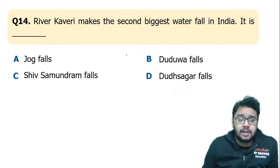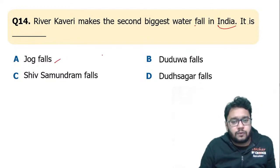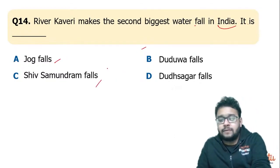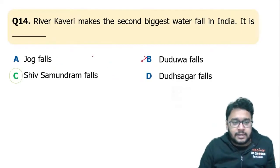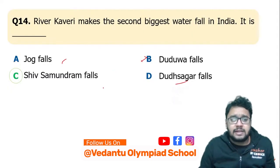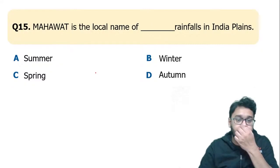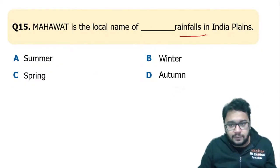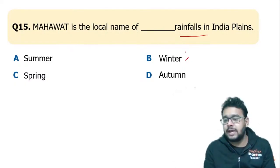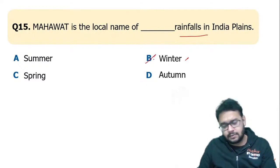River Kaveri makes the second biggest waterfall in India. The options were Jog Falls, Duduwa Falls, Shivanasamudra Falls, and Dudhsagar Falls. You can eliminate: Duduwa Falls is in Uttar Pradesh, Jog Falls is in the north, Dudhsagar Falls is in Andhra Pradesh — so Shivanasamudra Falls is correct, option C. Mahawat is the local name for rich rainfall in winter in India, caused by western disturbances — so B is the correct answer.